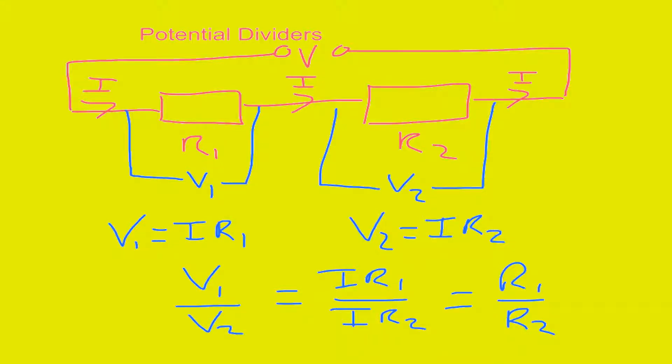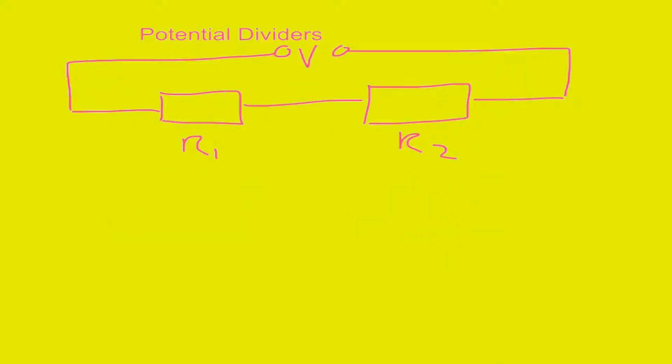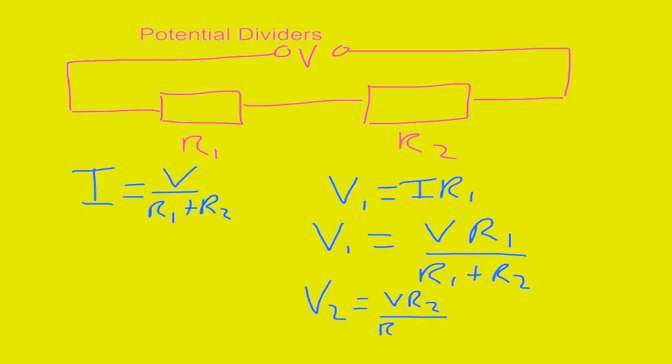But we can do it a bit better than that. If we now say that the current I going through these is given by the total voltage V over the sum of the resistances, then in this case, we can say if V1 is I times R1 from before, then the voltage across resistor 1 will be VR1 over R1 plus R2. And similarly, V2 will be VR2 over R1 plus R2.